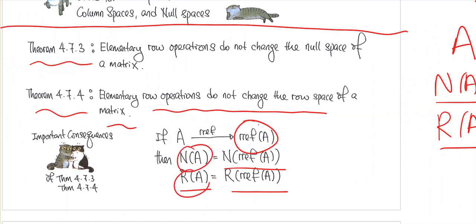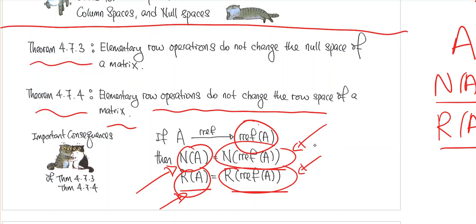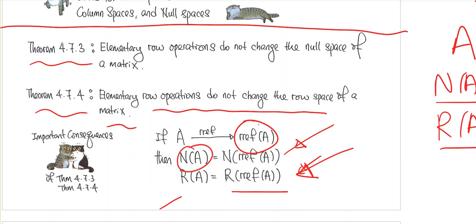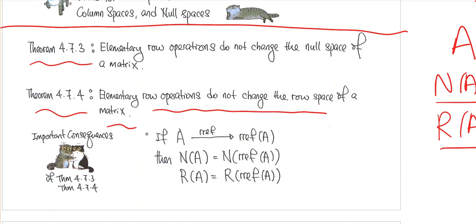This will help us find a basis for the row space and the null space of A, because now instead of looking at these two vector spaces directly, we can look at their corresponding vector spaces in the RREF matrix, which is easier to work with. That's the key point of these two theorems: if you are asked to find a basis for the null space of A, what you need to do is just look at the RREF matrix of A and extract information from there.